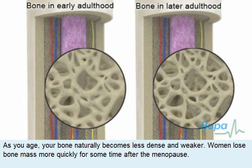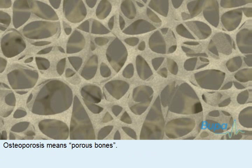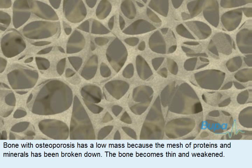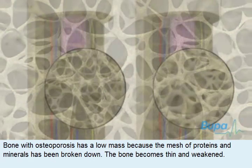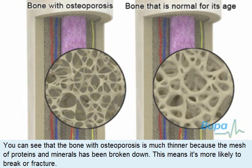Women lose bone mass more quickly for some time after the menopause. Osteoporosis means porous bones. Bone with osteoporosis has a low mass because the mesh of proteins and minerals has been broken down. The bone becomes thin and weakened. Here we compare a bone with osteoporosis to a bone with normal mass for its age. You can see that the bone with osteoporosis is much thinner because the mesh of proteins and minerals has been broken down. This means it's more likely to break or fracture.